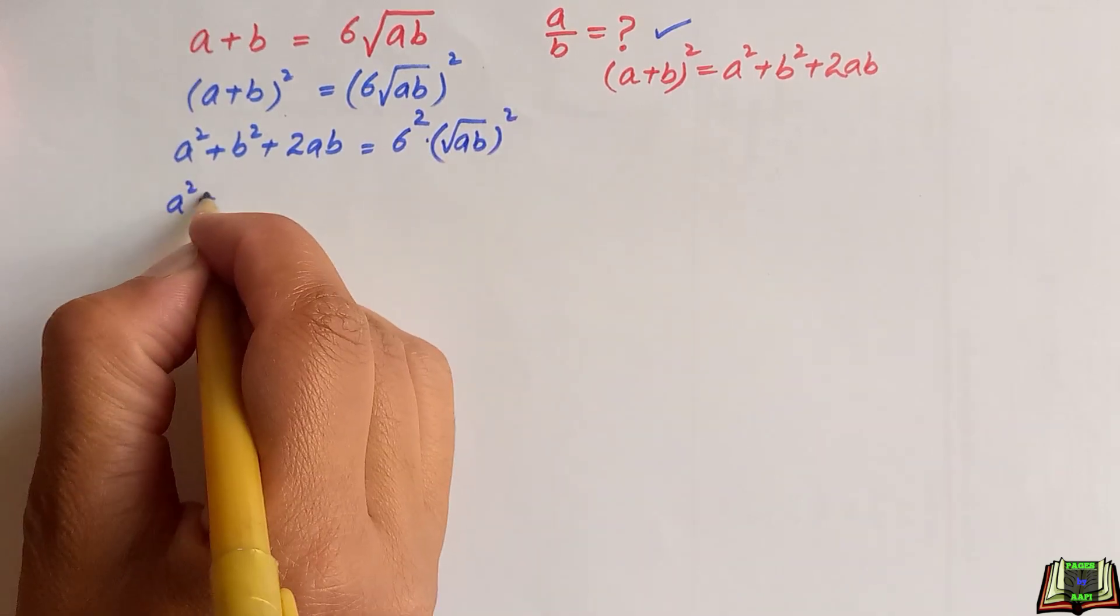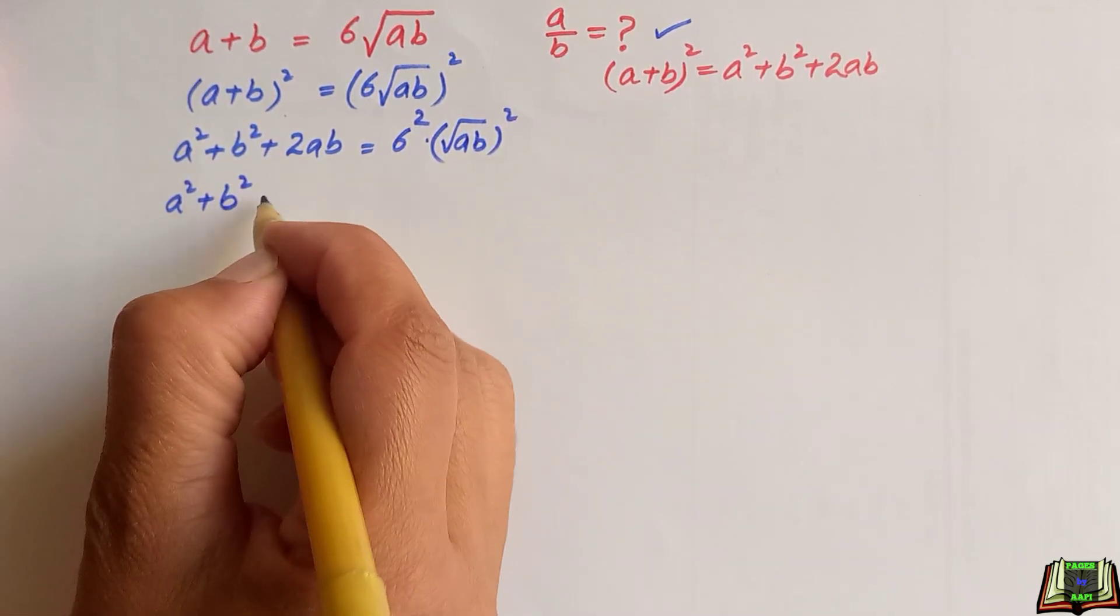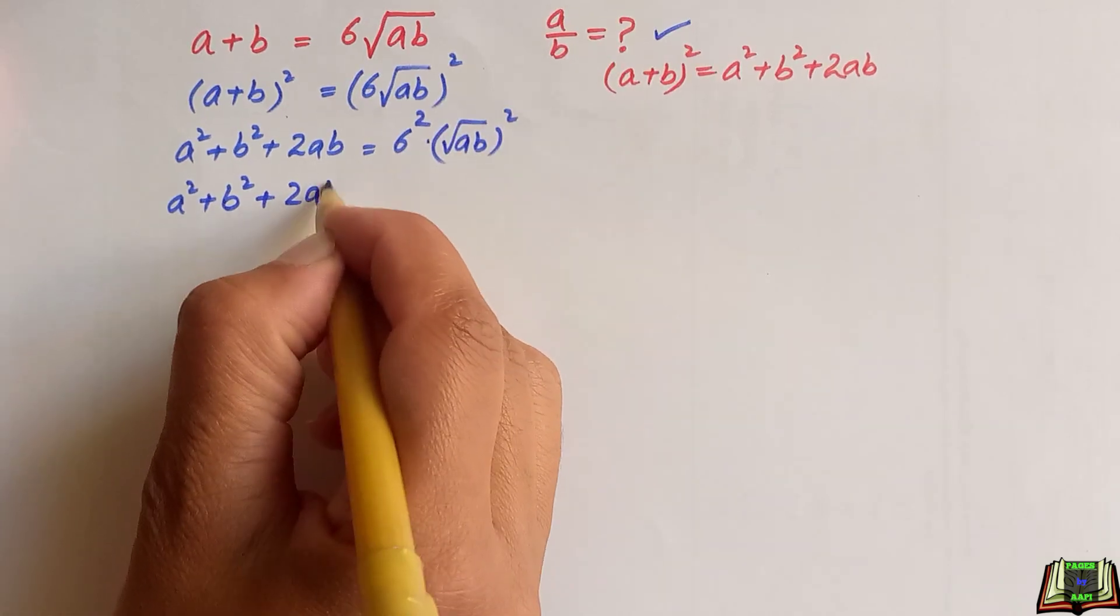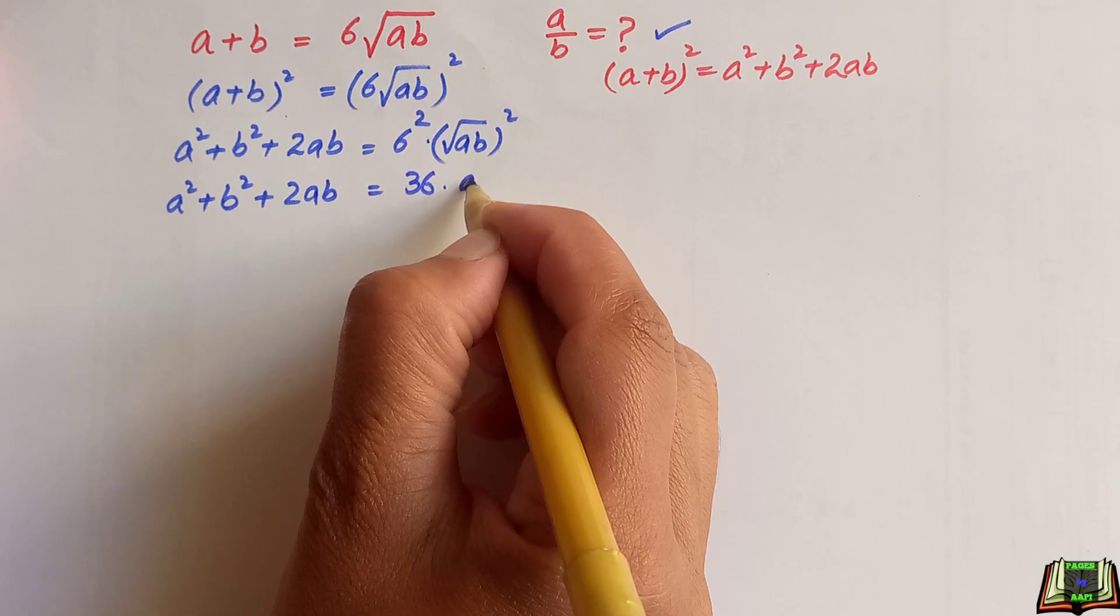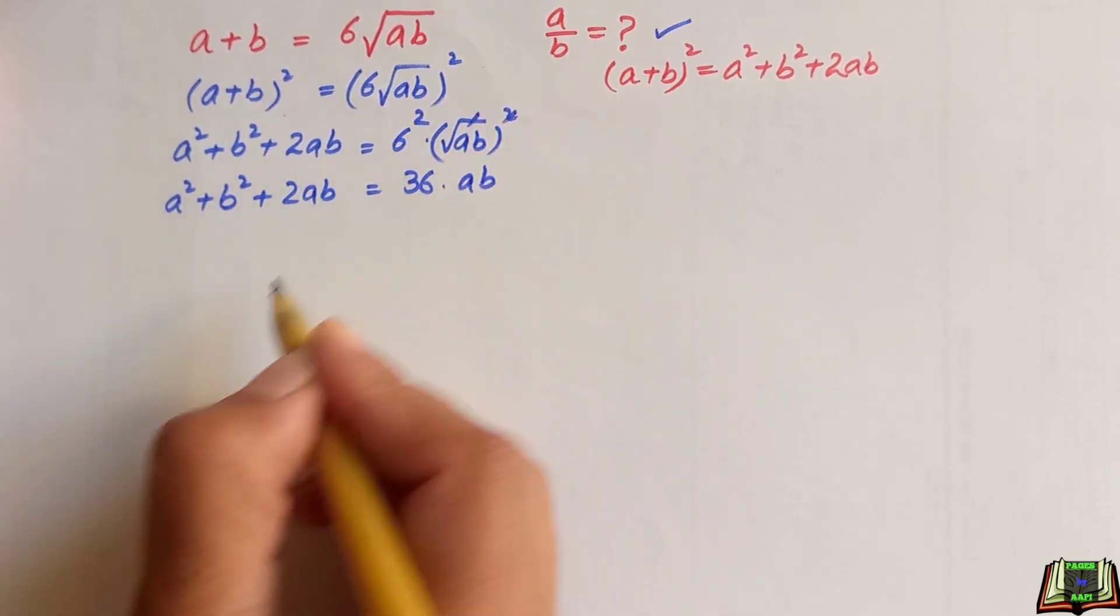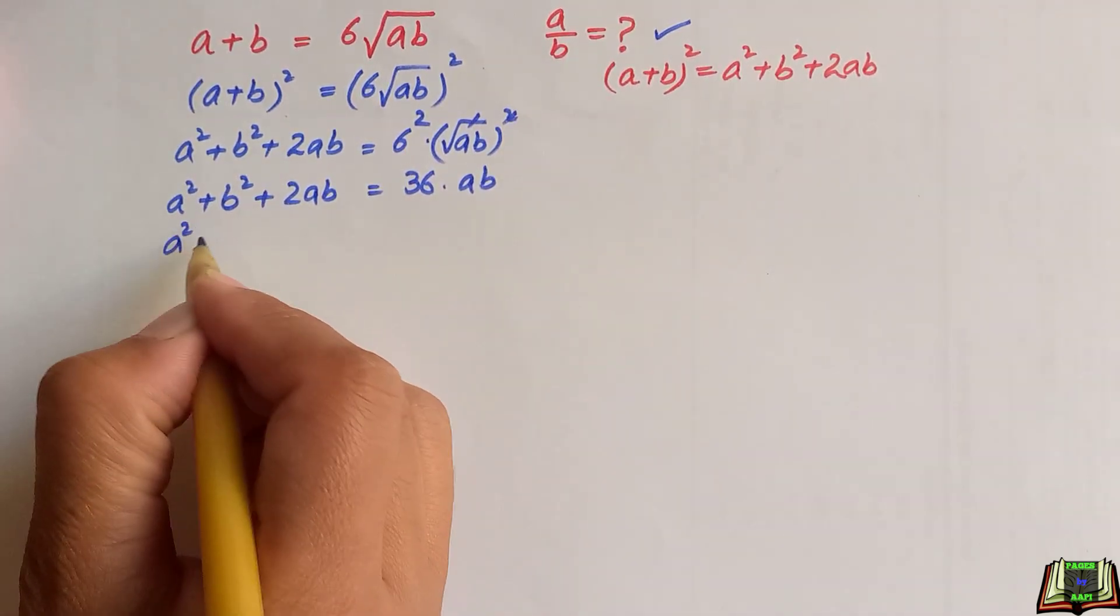Left hand side will be written as it is and on right hand side, 6 square is 36 times ab because root and square will be cancelled out. In the next step,